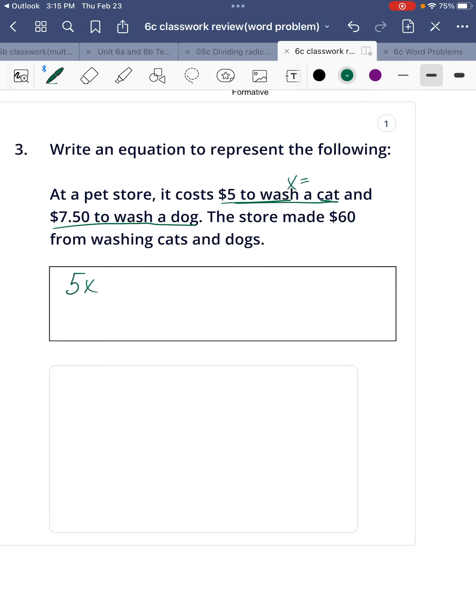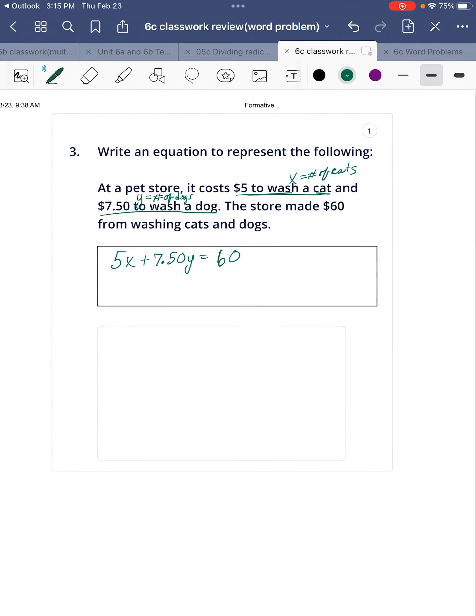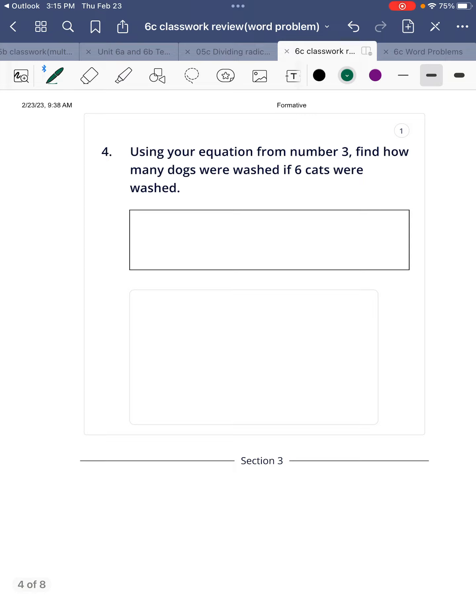So it's going to be $5 times however many cats. So x equals number of cats washed, plus $7.50 times y, and that's going to be the number of dogs. And that's going to equal, and then the store made $60. There's your equation.